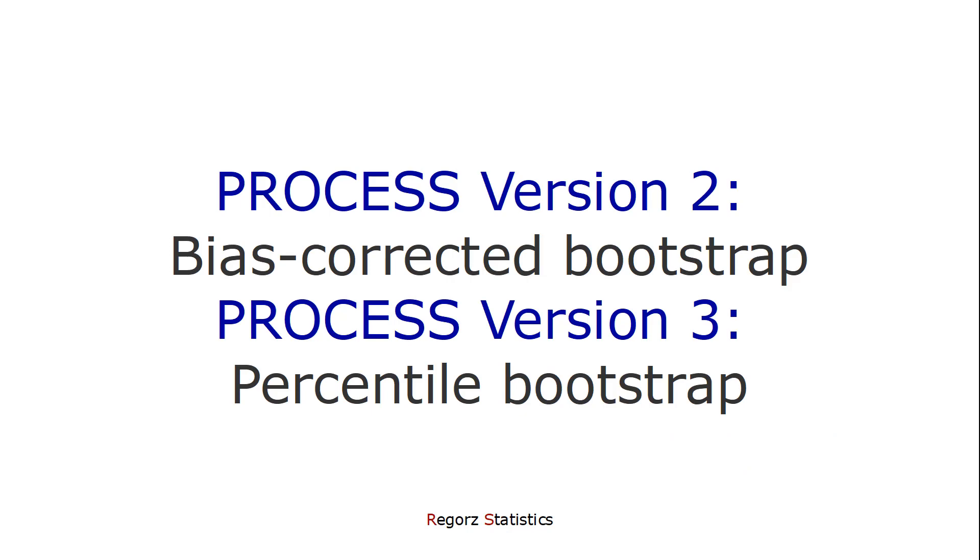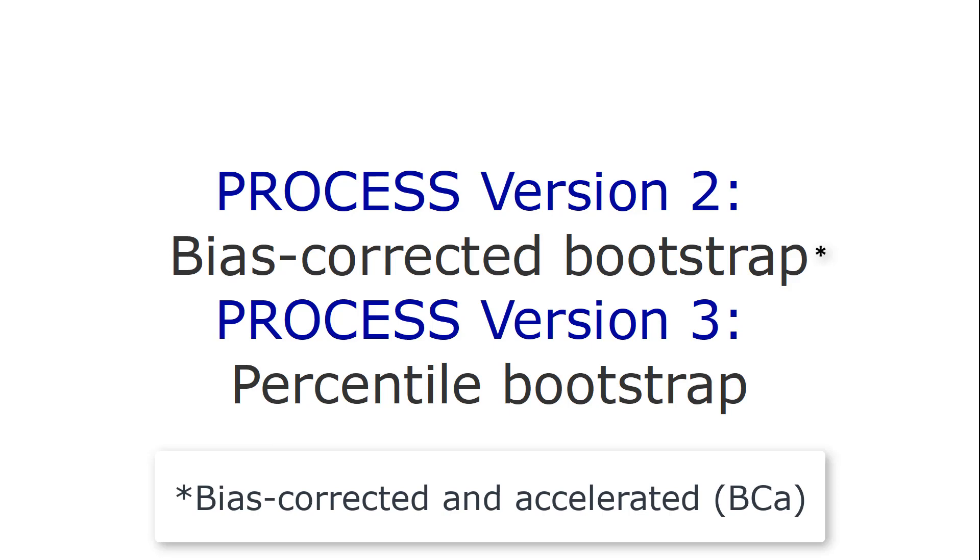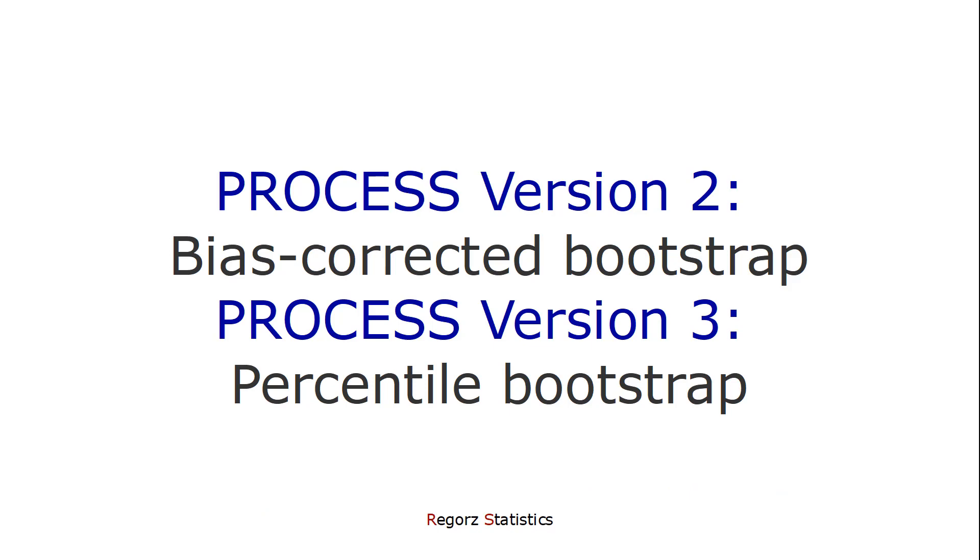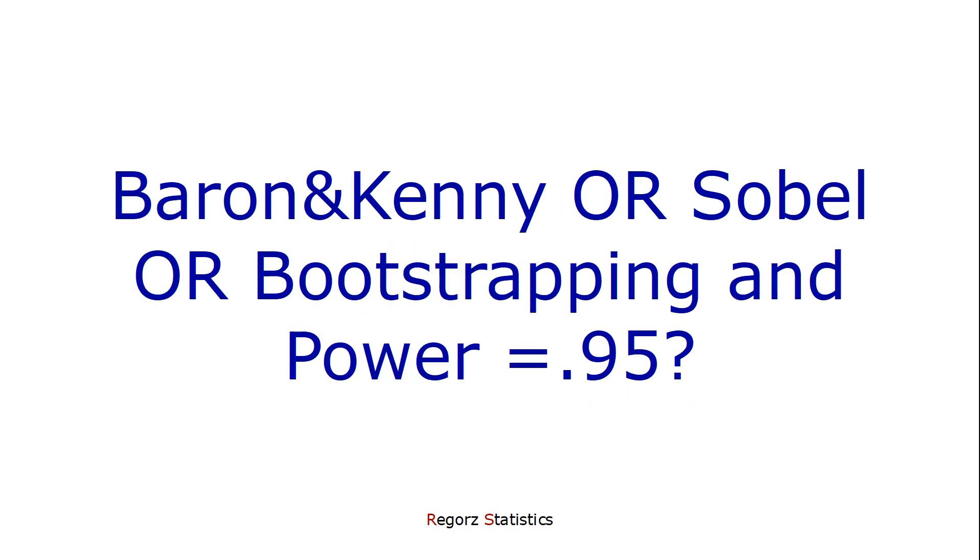Please keep in mind, if you use the PROCESS version 2, you use bias-corrected bootstrap and should look up in the Table 3 by Fritz and MacKinnon the row bias-corrected. Whereas in PROCESS version 3, you use percentile bootstrap and use that row in the table 3. So what do you do if you use Baron and Kenny or Sobel test or bootstrapping and you want a power of 0.95?